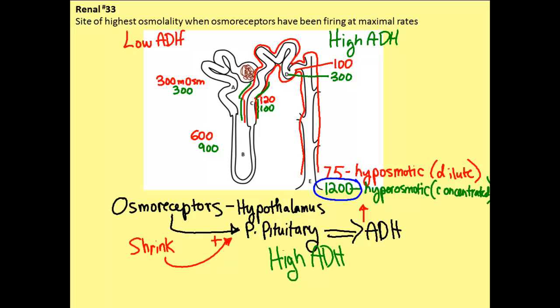Within the end of the collecting duct is where we expect to see the highest osmolality when osmoreceptors have been firing at maximal rates. I would suggest that as you go through the rest of these problems that are using this same figure, that you make sure that you are repetitively asking yourself to go through each of the values in order to determine where the highest and lowest osmolalities would be in different situations in order to make sure that you don't make any mistakes on the exam.